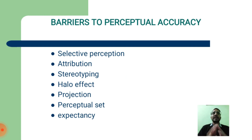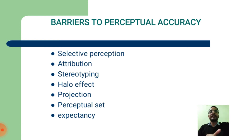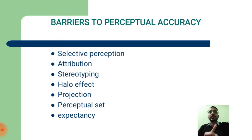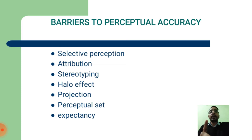Barriers to perceptual accuracy. First, selective perception. Second, attribution. Third, attention and span of attention. Fourth, stereotyping. Fifth, the halo effect. Sixth, perceptual set. Seventh, expectations and intensity. Eighth, status.